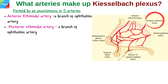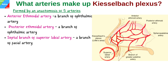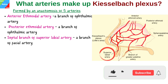The anterior and posterior ethmoidal arteries give blood supply to the roof as well as the septal wall of the cavity as they travel to Little's area. The septal branch of the superior labial artery, which is a branch of the facial artery, enters the nasal cavity through the nares and joins the anastomosis at Little's area.